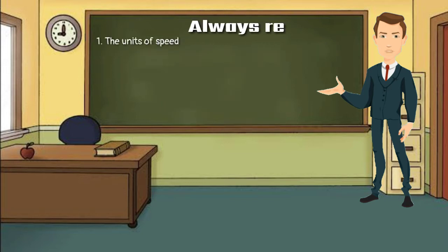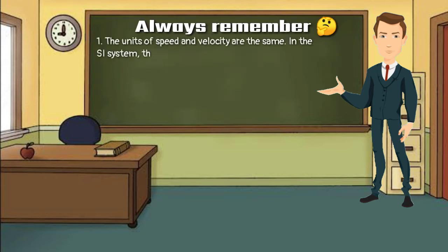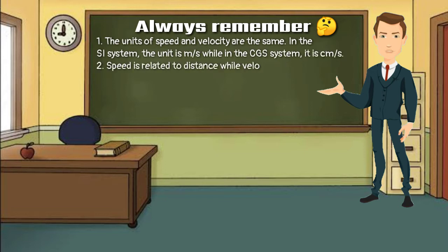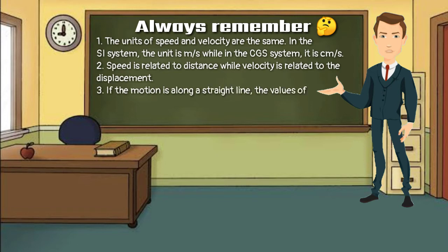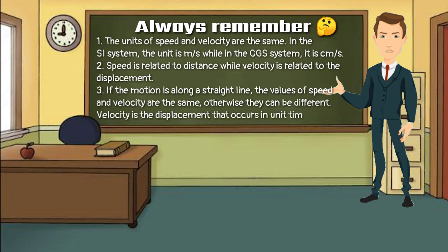Always remember: the units of speed and velocity are the same. In the SI system, the unit is meter per second, while in the CGS system it is centimeter per second. Speed is related to distance while velocity is related to displacement. If the motion is along a straight line, the values of speed and velocity are the same; otherwise they can be different.